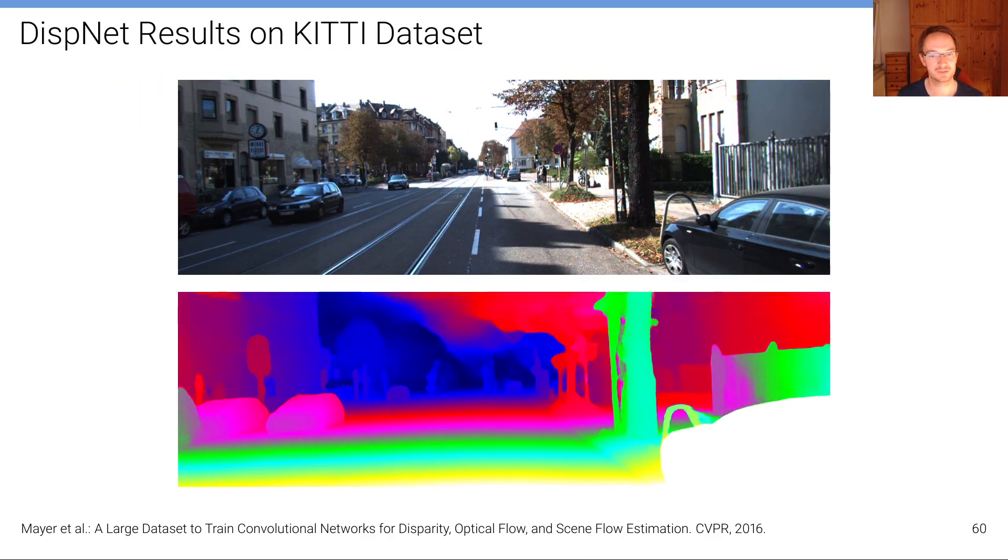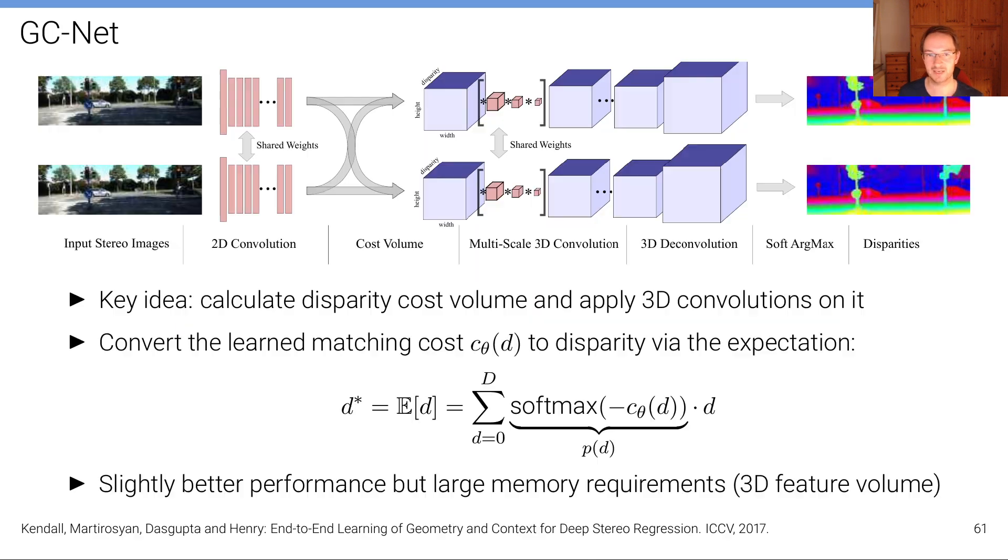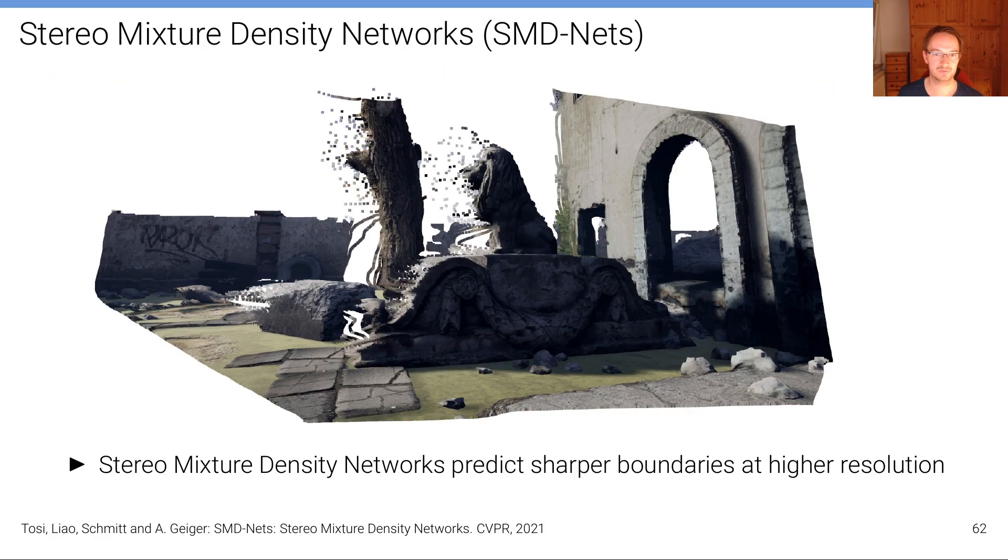and they can't be applied to very large image resolution and one particular problem of these models is also that if we use these models then because of the intrinsic smoothness properties of deep neural networks we get these smearing artifacts. You can see that the borders are not very sharp and if we would project such a disparity map into 3D space we would see